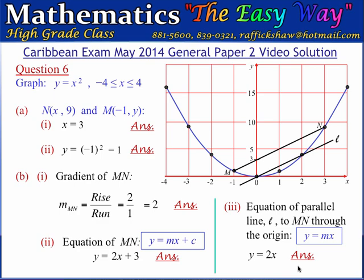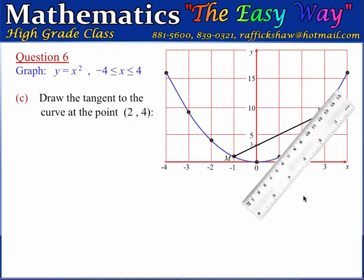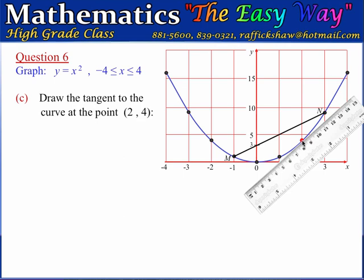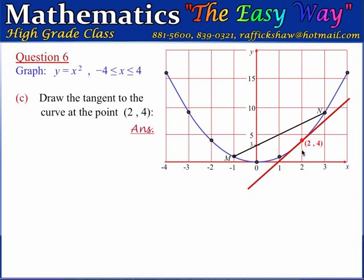Part C asks us to draw carefully the tangent to the curve at the point (2, 4). We mark the point (2, 4) on the diagram. To draw a tangent, we position a ruler carefully so that it just touches the curve at that point, with the curve and the ruler in the same direction at that point. We draw the line and this is the tangent at (2, 4).